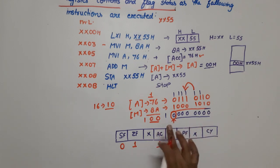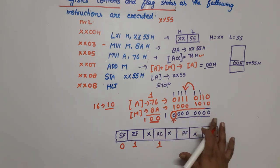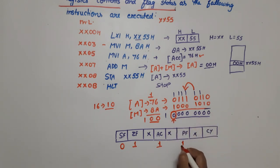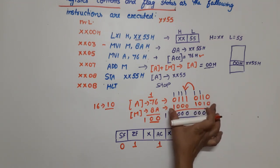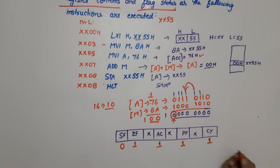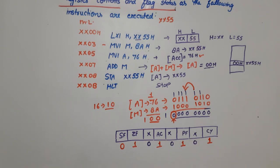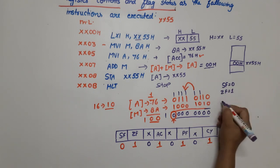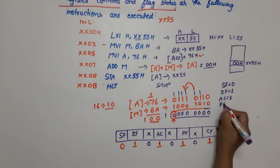For the parity flag PF, we check the number of ones in the result. In this case the result is 00H and there are no ones, so the count is even, making PF = 1. For the carry flag CF: when we performed the addition, our numbers were 8 bits but the result was 9 bits, meaning an extra carry bit was generated, so CF = 1. So the flag values are: SF=0, ZF=1, AC=1, PF=1, CF=1.